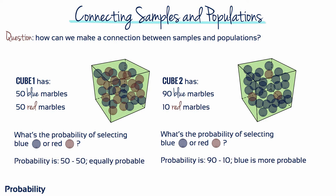With the first cube, you have a 50-50 chance of getting either colour — you're just as likely to pick a blue marble as a red one. For cube 2, the probability is 90 to 10, or put more simply, 9 to 1. It's 9 times more likely that you pick a blue marble from this cube than a red one.